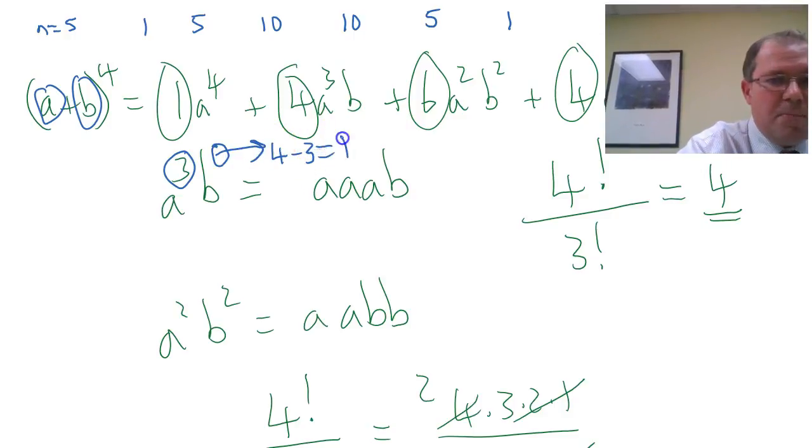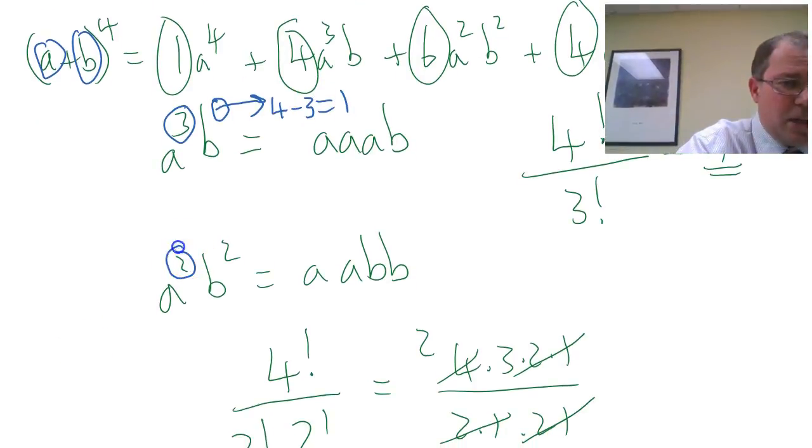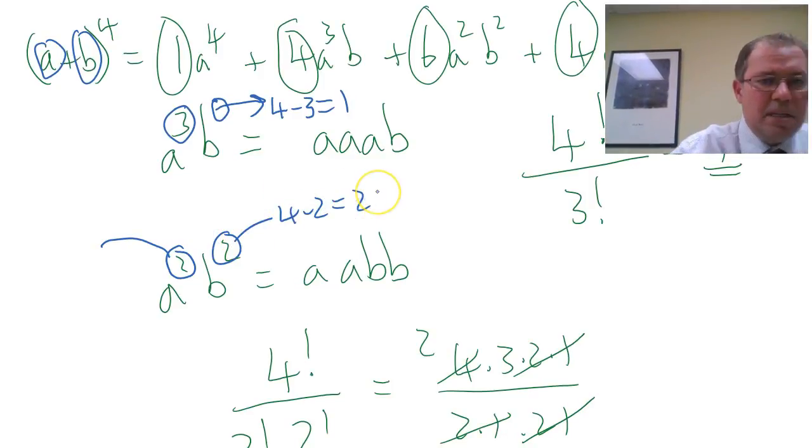Then the b has to be 4 minus the 3 a's. So I've got 1 b. Equally, if I've got 4 items, and 2 of them are a's, the b's have to be 4 minus 2, 2 b's has to be. So let's consider that.